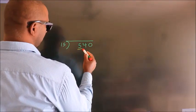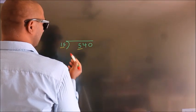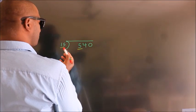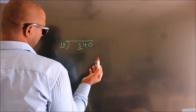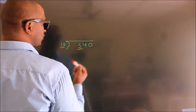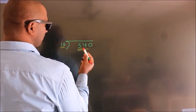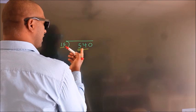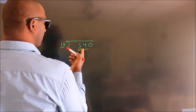Here we have 5. Here 15. 5 is smaller than 15, so we should take two numbers: 54. A number close to 54.